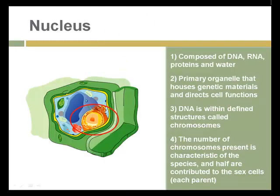The nucleus of the cell, circled here, is composed of DNA — deoxyribonucleic acid. That's the genetic material that allows cells and organisms to reproduce themselves, and it's the primary organelle that directs cell functions. DNA is within defined structures called chromosomes, and how chromosomes behave when cells are dividing — especially during sexual reproduction — will be covered in a future lesson.